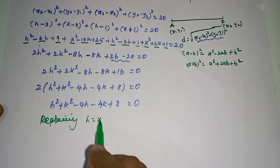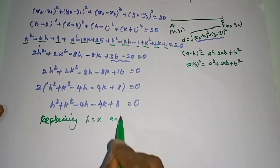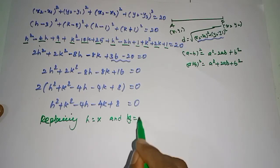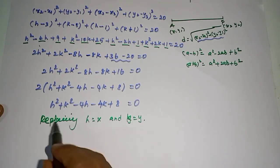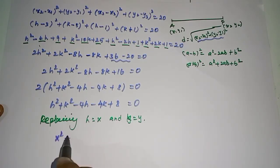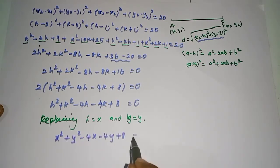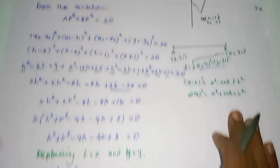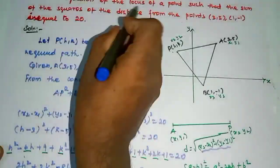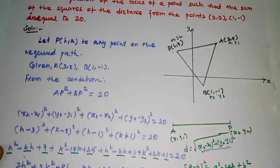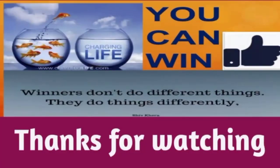Once we get the h and k equation, to finalize the locus we replace h with x and k with y. So the final equation of the locus is x² + y² − 4x − 4y + 8 = 0.